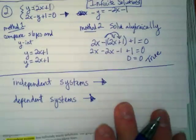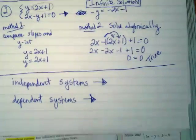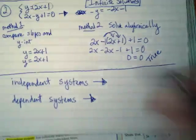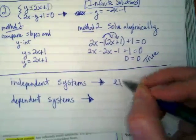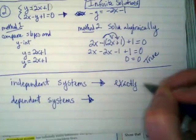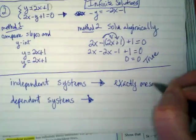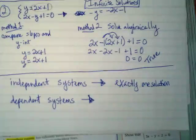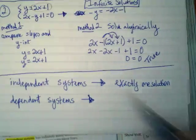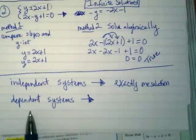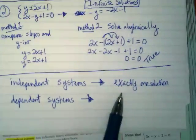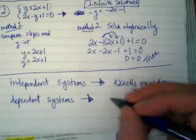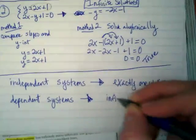Independent systems are the kind of systems you guys have been solving a lot. They have exactly one solution, and it's going to be an x-y pair. It's where the two things cross. A dependent system is the opposite of this. Instead of having exactly one solution, one x-y pair, it has infinite solutions.